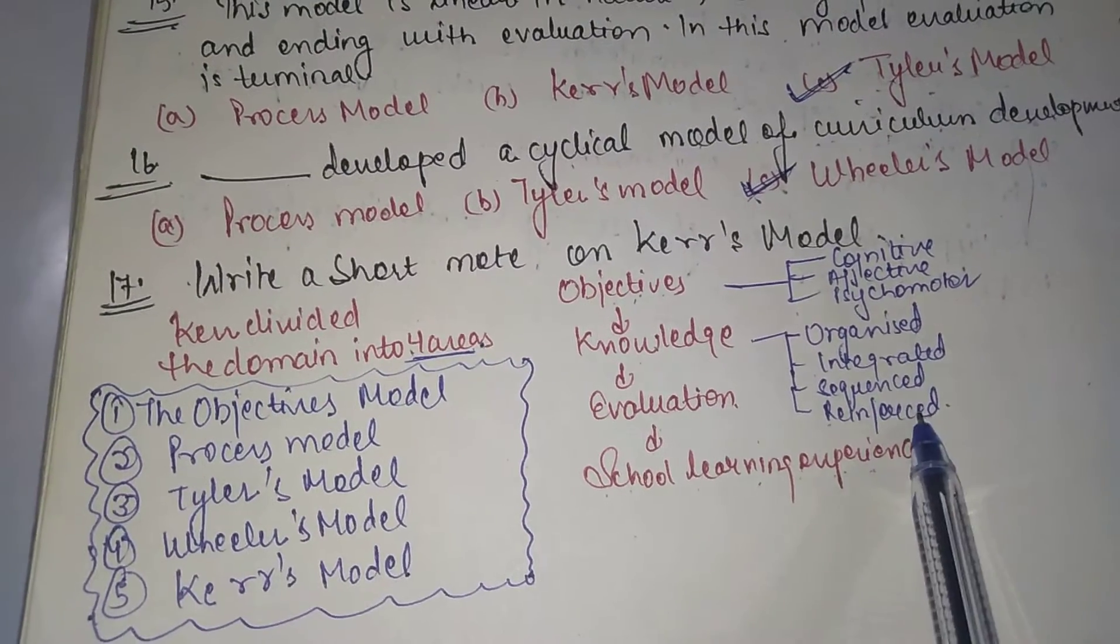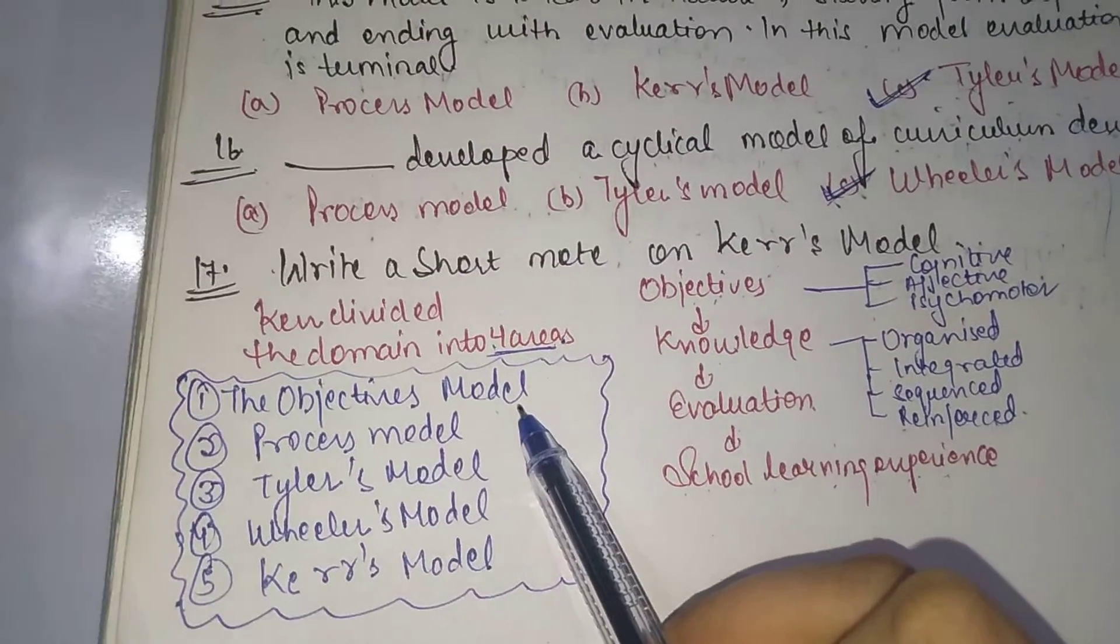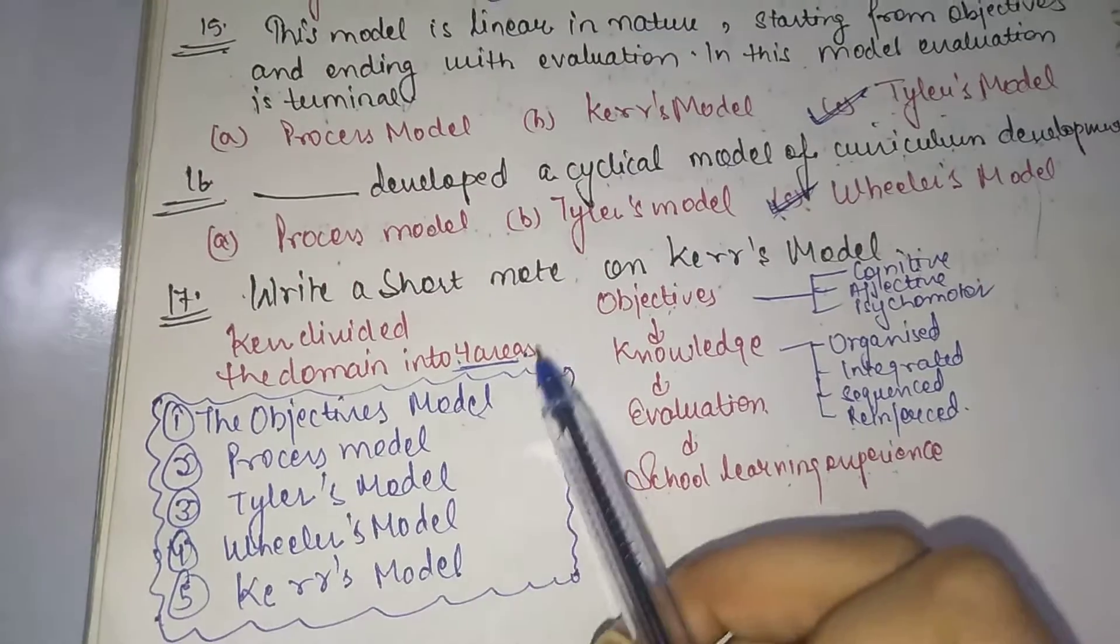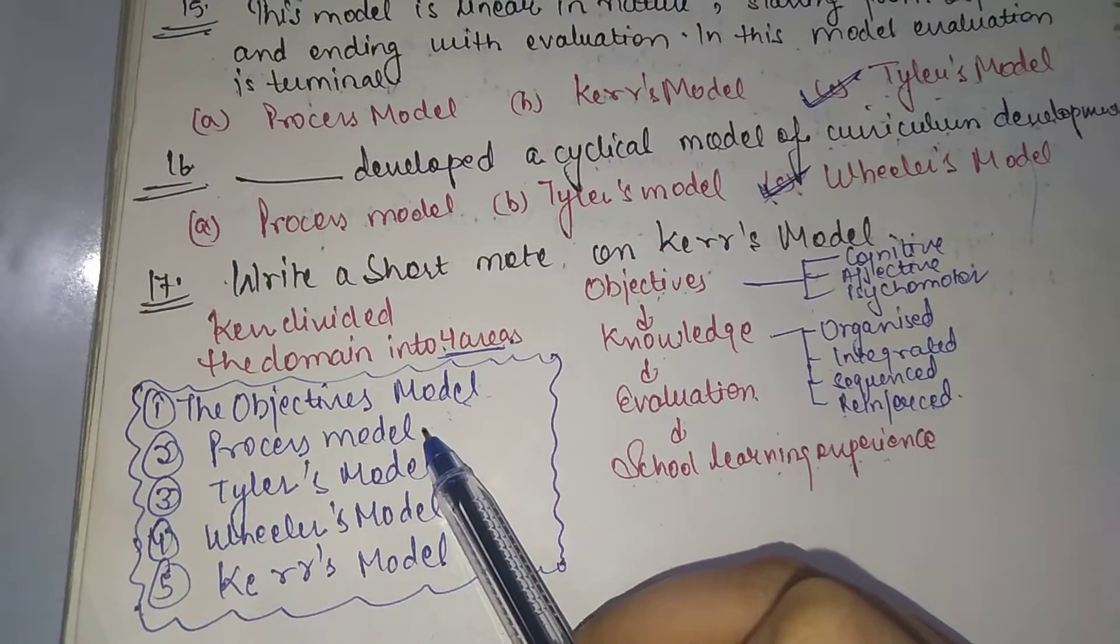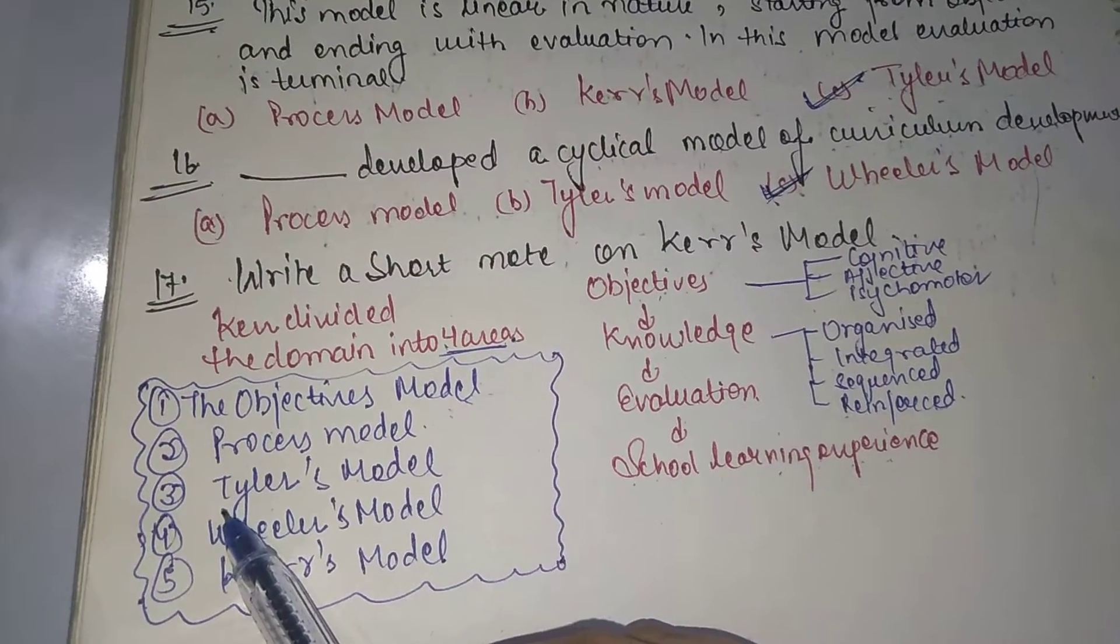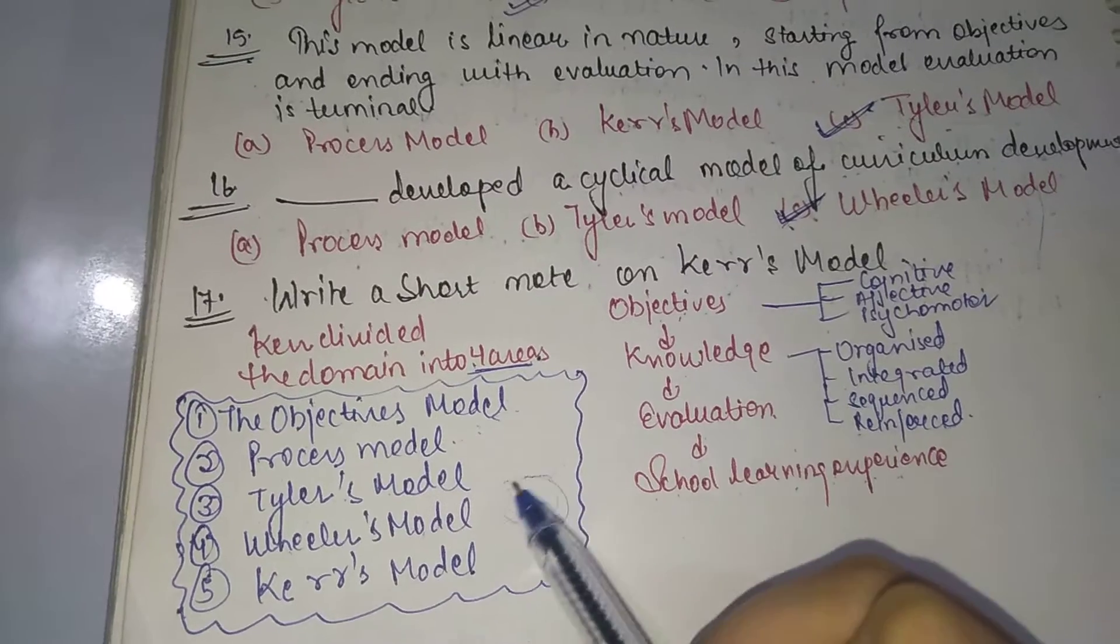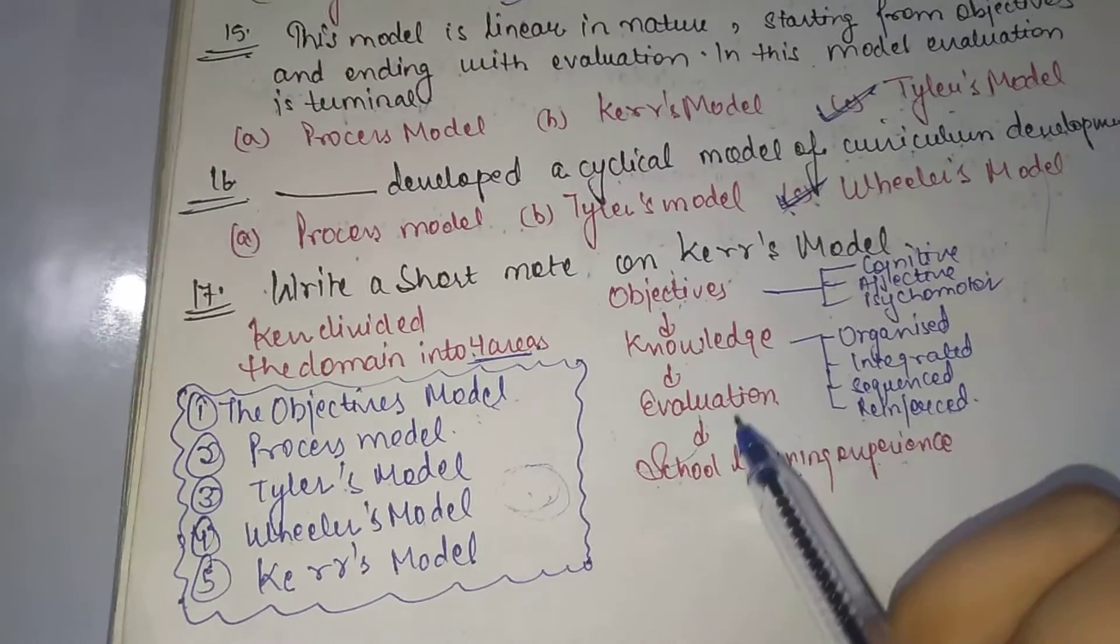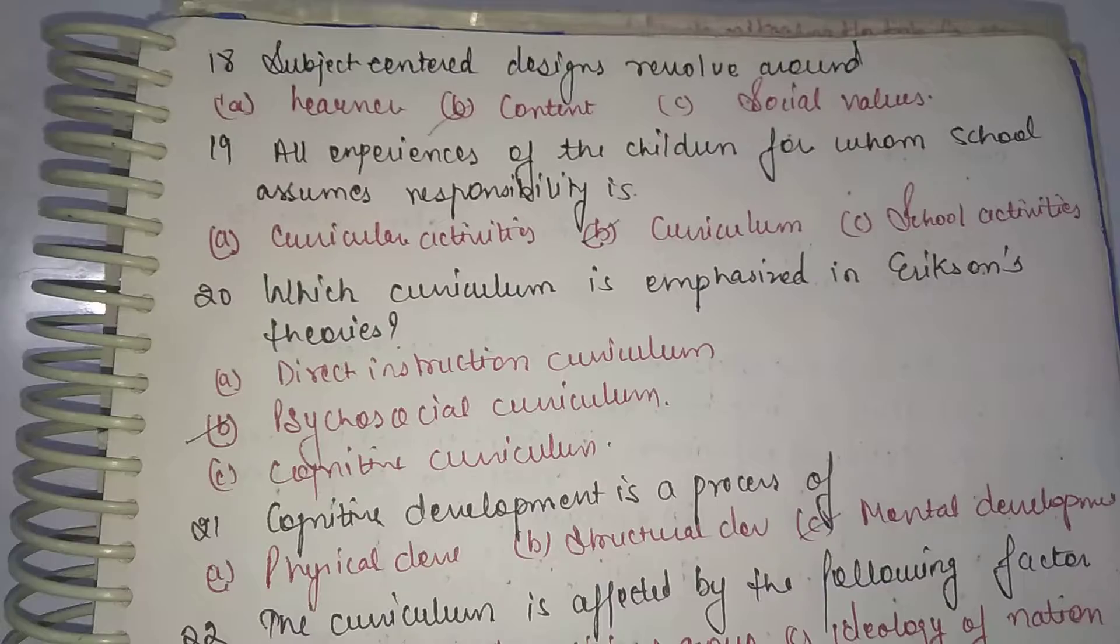Now we will revise all of the models. The first model is the objectives model. The next is process model in which we do not consider objectives. Third model is Tyler's model, T for Tyler and T for Terminal, the model in which evaluation is the terminal step. Next is Wheeler's model which is a cyclic process. We will review our last evaluation, we will review our aims, goals and objectives again according to our evaluation. Next is the Kerr's model that we have just discussed.